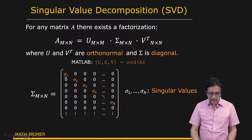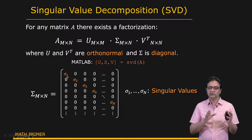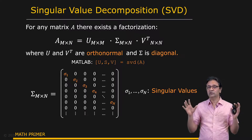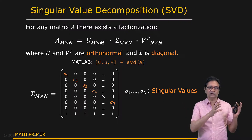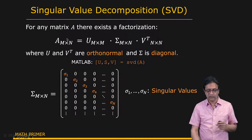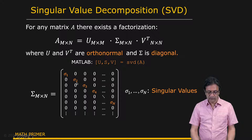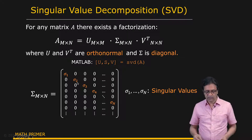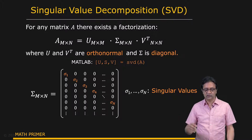If you multiplied everything out, sigma one ends up multiplying some of the rows and columns of U and V, and those rows and columns make the largest contributions to the reconstruction of matrix A — they are the most important rows and columns of U and V. Sigma two is the next most important singular value, and the rows and columns associated with it are the second most important.